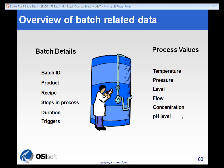What we bring to the table with the batch processing are the batch details. These are things like batch ID, the product and recipe that's being produced or used, and what are the steps in the process. Most importantly, duration and triggers — those are two key aspects for the batch-related data in the PI system.